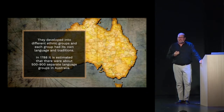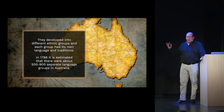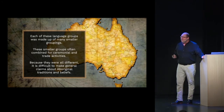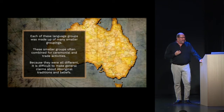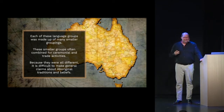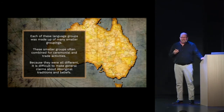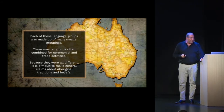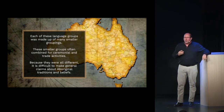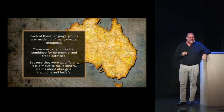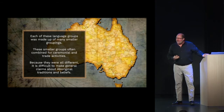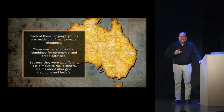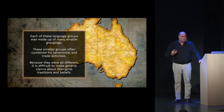Imagine 500 to 900 distinct language groups when Europeans arrived just 200 years ago. Each language group was made of even smaller groupings with further dialectical changes, and these groups often got together for ceremonial and trade activities. When we're talking about a continent roughly the same size as the United States or Europe, think about how spread out these people must have been. It makes it difficult to say definitively 'this is Aboriginal culture' because there are so many varied groupings. We have to look at the larger features and how all these groups fit together into a bigger picture.